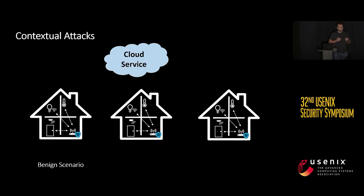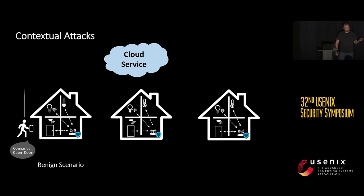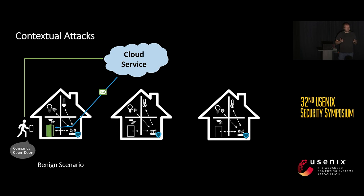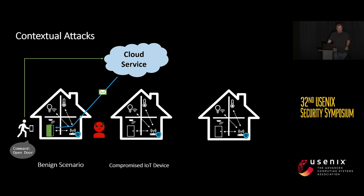But what are contextual attacks actually? Let's look at three different scenarios. First, we have the benign scenario: the user arrives at home, uses his smartphone to send a message to the cloud service — for example, the cloud of the smartphone manufacturer — that he would like to open the door, and then the cloud service sends a message to the smart door saying please open.